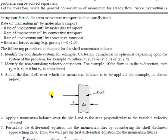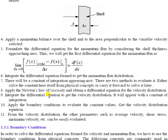Fourth, apply the momentum balance over a shell to the area perpendicular to the selected variable velocity. The momentum balance theorem is applied perpendicular to the direction of velocity variation — for example, in the x-direction.